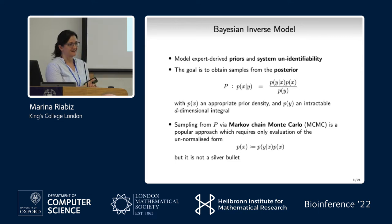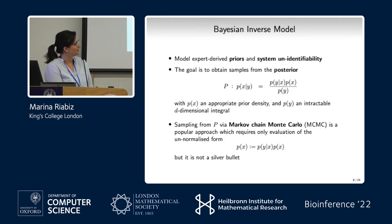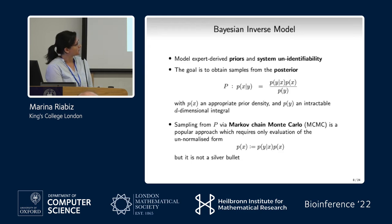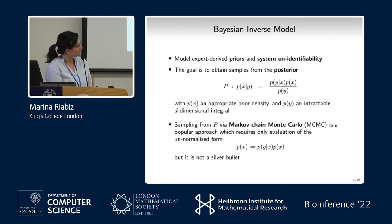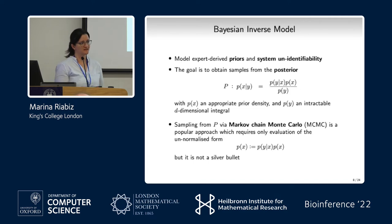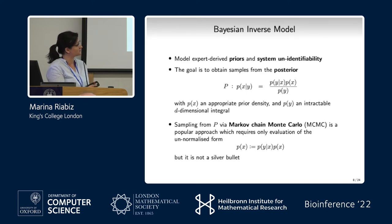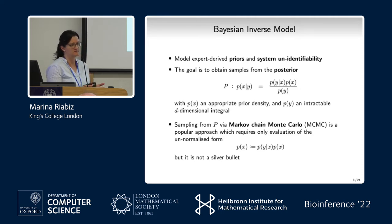A way to avoid dealing with this intractable integral is to use MCMC methods, which allow you to set up a machinery to iteratively sample from a distribution that will eventually converge to your posterior of interest. At convergence, you get a correlated sample from the posterior pi. However, MCMC is not a silver bullet — it suffers from a number of problems, especially in high-dimensional settings like this one with around 40-dimensional parameter space.